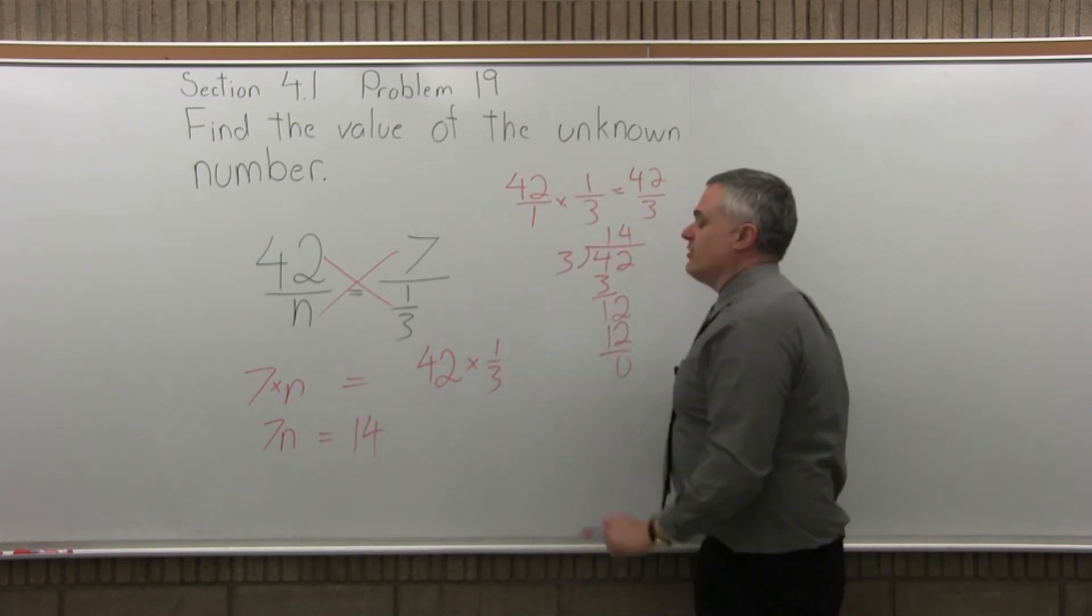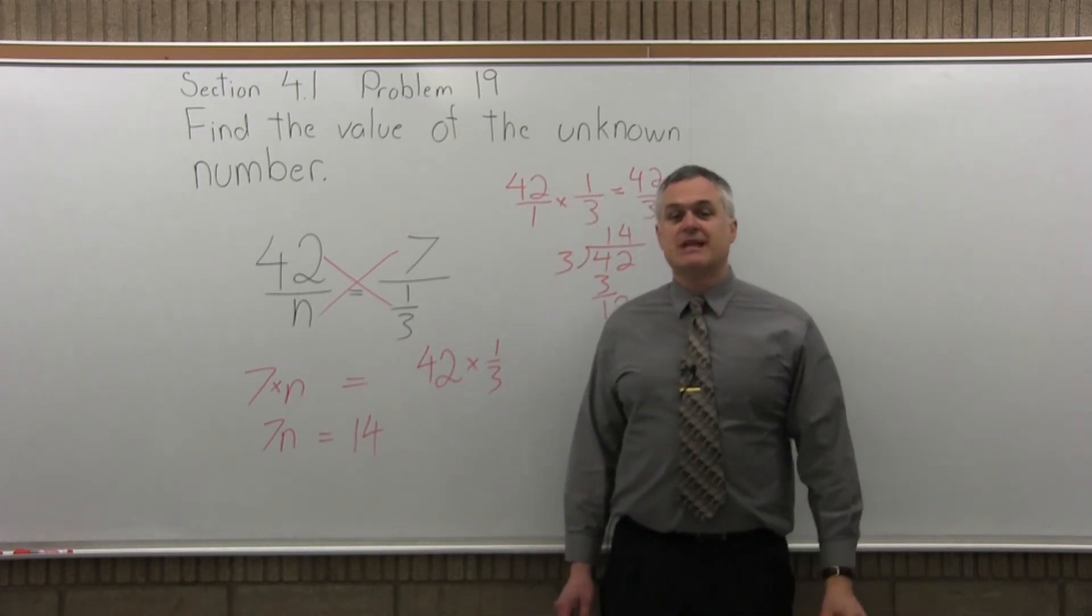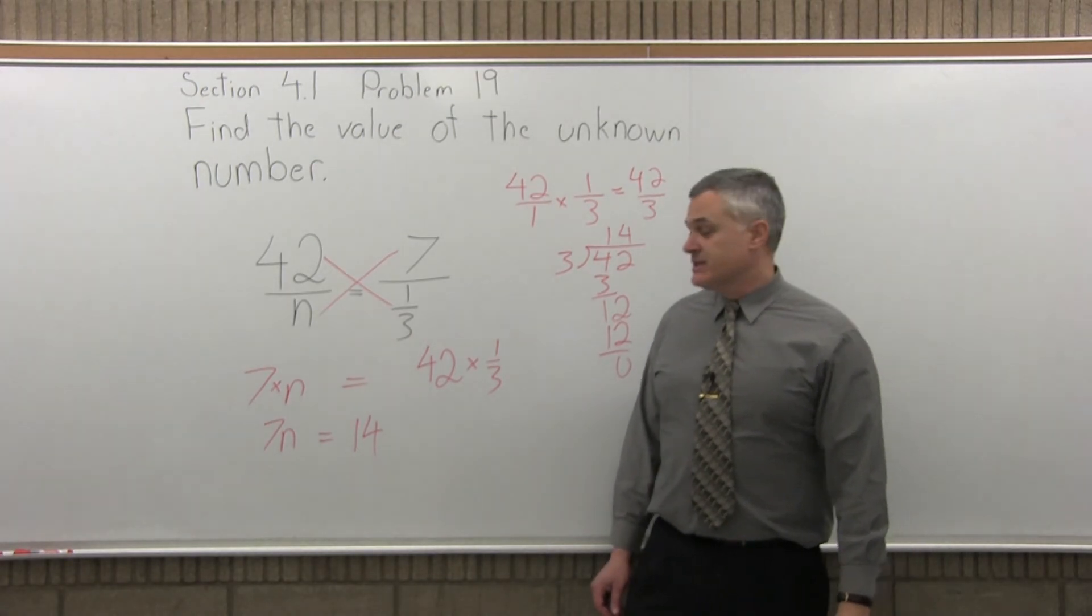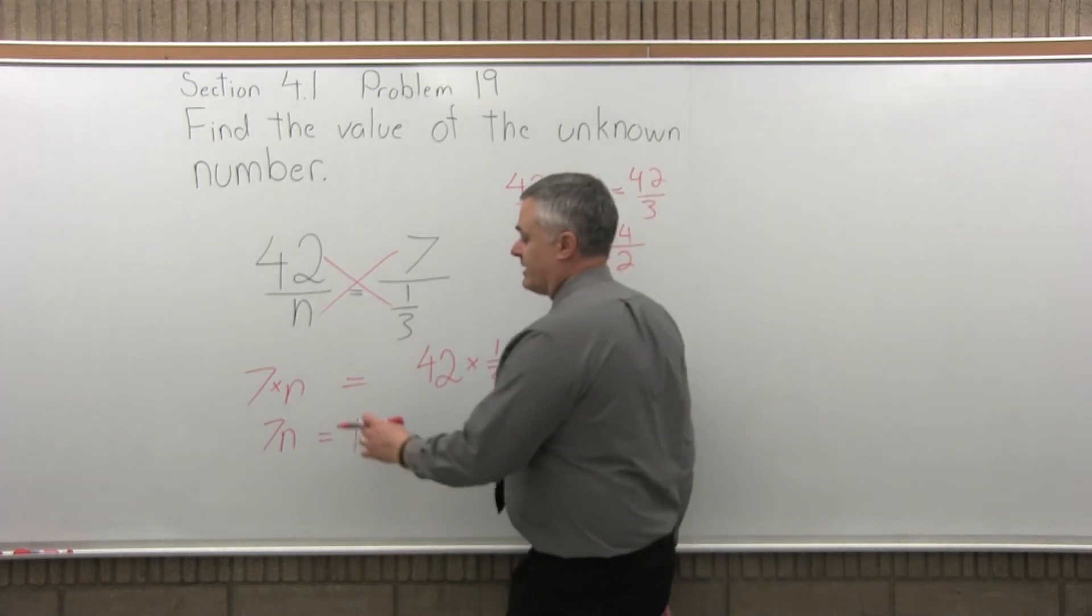So, 42 times one-third is 14. I have 7n equals 14. I want n equals, not 7n equals. I'd like to get rid of the 7.